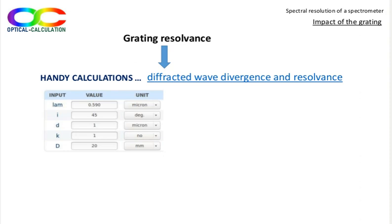The grating is blazed for the first order, which is parameter k, with an incidence angle of 45 degrees, parameter i, and at the central wavelength of the considered spectrum, that is to say 590 nm, its parameter lambda. With this input, the resolvance is 20,000.